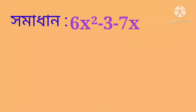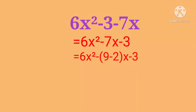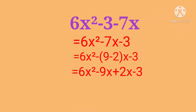Using the 3 times method on 6x squared minus 7x minus 3, we split the middle term. We rewrite it as 6x squared minus 9x plus 2x minus 3.